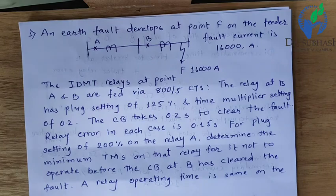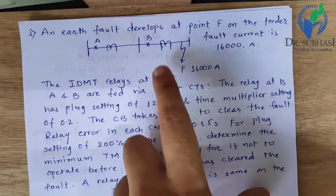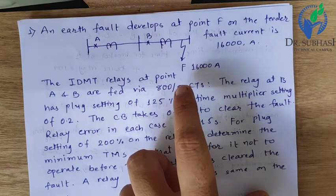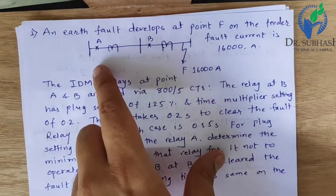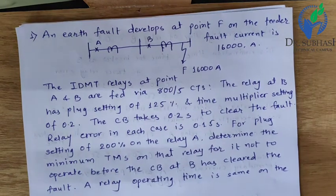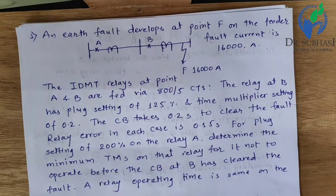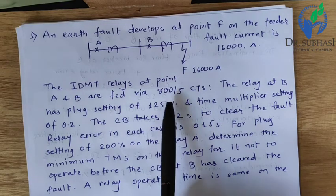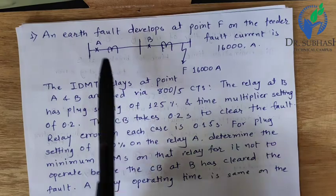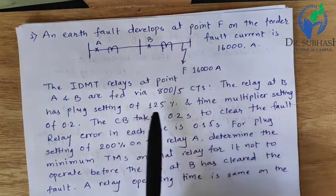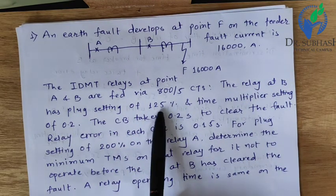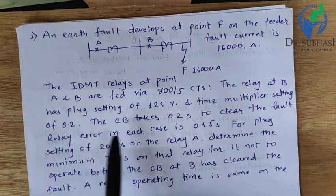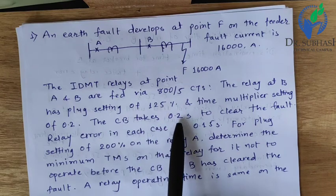First Numerical: an earth fault develops at point F on the feeder. The fault current is 16,000 Ampere. Bus bar A and bus bar B with two breakers and two CTs. The IDMT relay at point A and B is fed via 800/5 CTs. The relay at B has Plug Setting 125% and Time Multiplier Setting of 0.2. The CB takes 0.2 seconds to clear the fault.